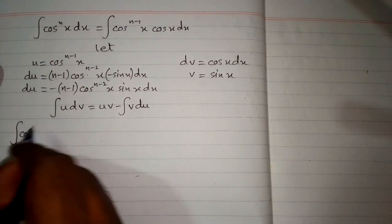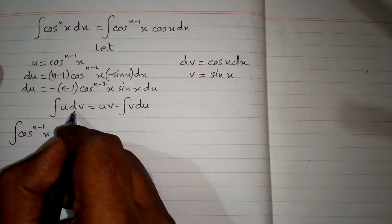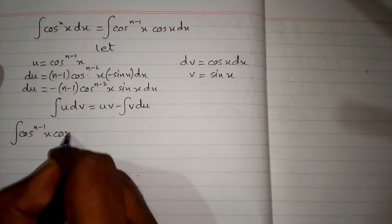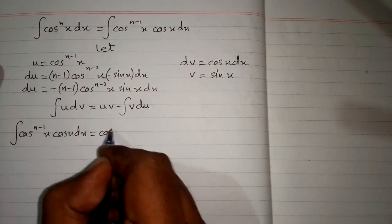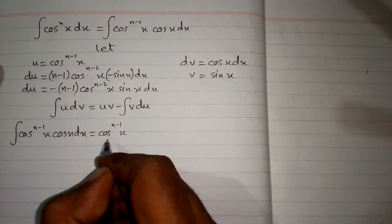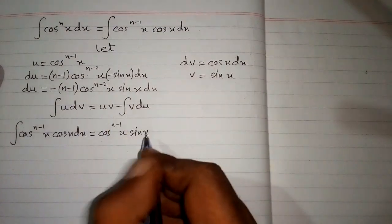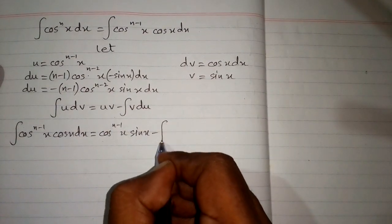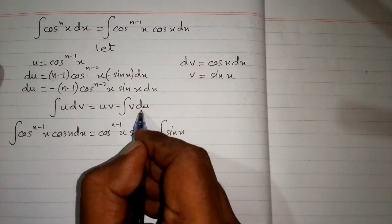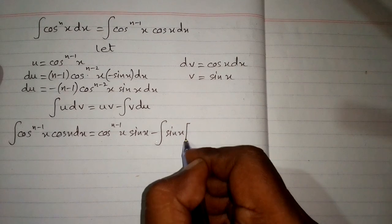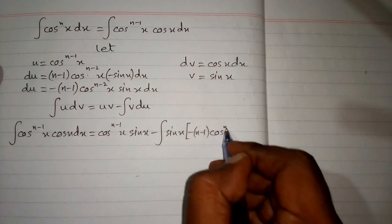First we put the value of u: u is cosine raised to the power n minus 1, and dv is cosine x dx. Then we write u times v, which is cosine raised to the power n minus 1 times sine x, then minus v times du.